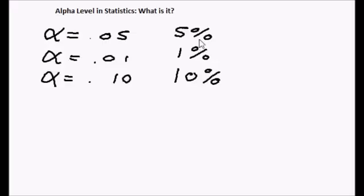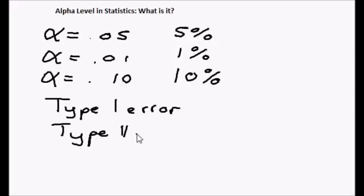But 5% of what or 10% of what? The answer has to do with something called a type 1 error and a type 2 error.